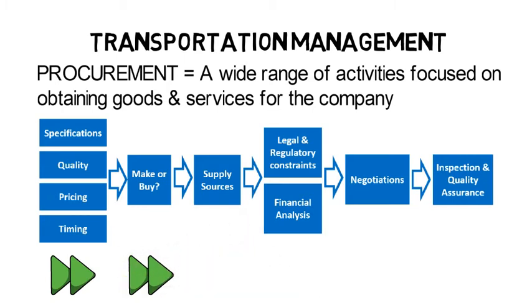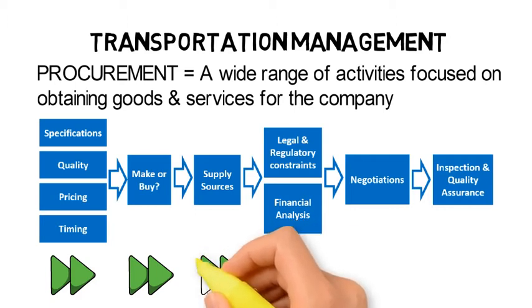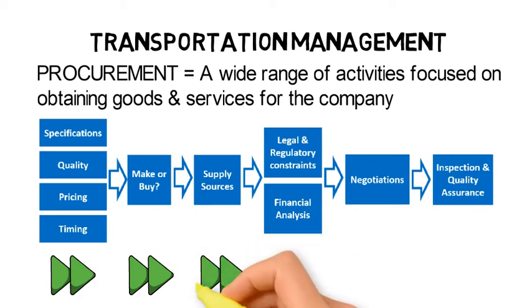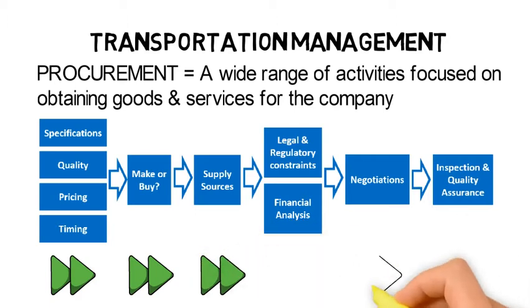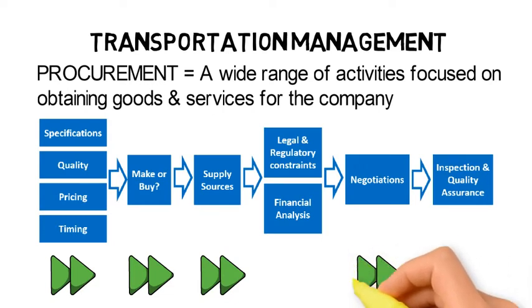Either way, the company needs to identify supply sources. If you make it, you buy raw materials; otherwise you buy the finished goods. The rest of the process includes examination of legal and regulatory constraints, finances, negotiations, and finally, quality assurance upon receipt of the final goods.